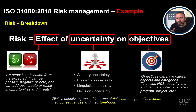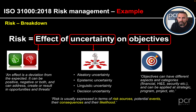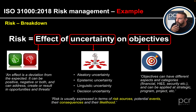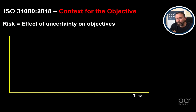ISO 31000 also tells us that risk is usually expressed in terms of risk sources — where the risk comes from — so categories and types of risk. These could be health and safety risk, compliance risk, legal risk, security risk. It's really good to define those within your organization. Risk also covers potential events, consequences, and their likelihood. Most people see risk in terms of consequence and likelihood — whether something is going to happen, and what the severity will be — remembering this can be positive as well.